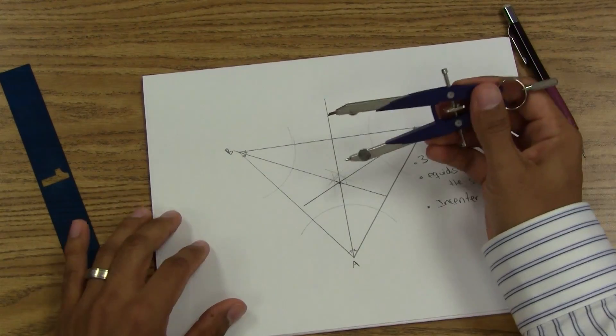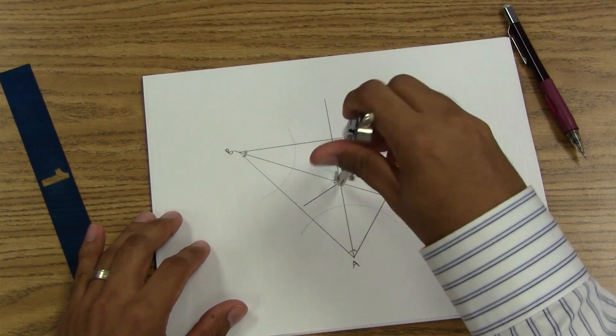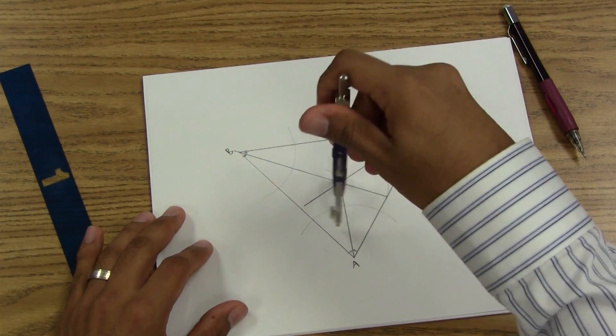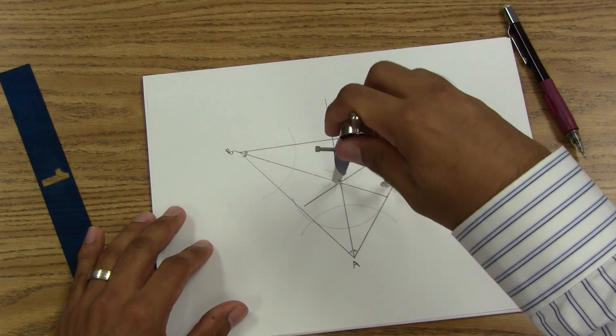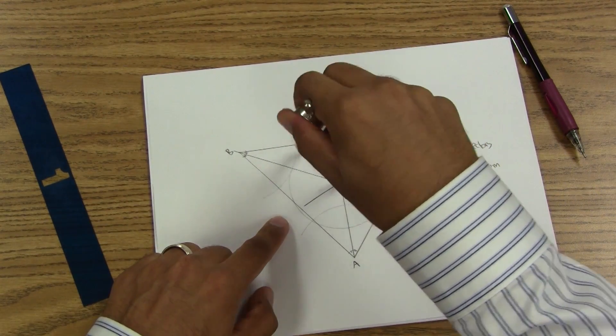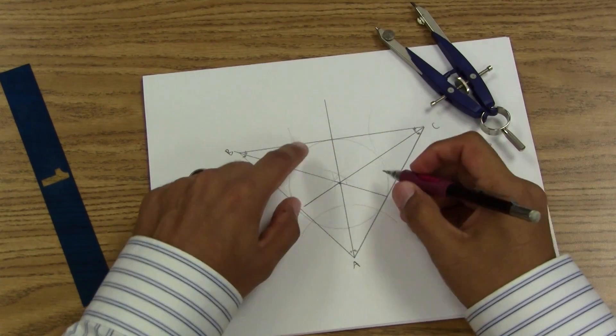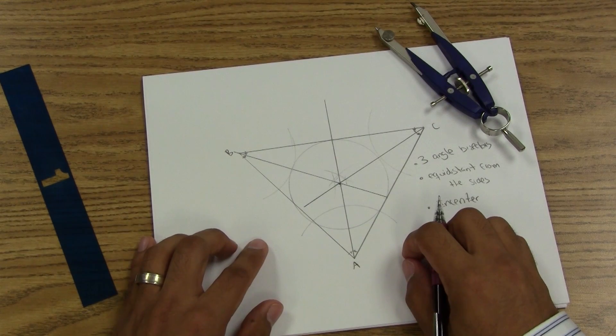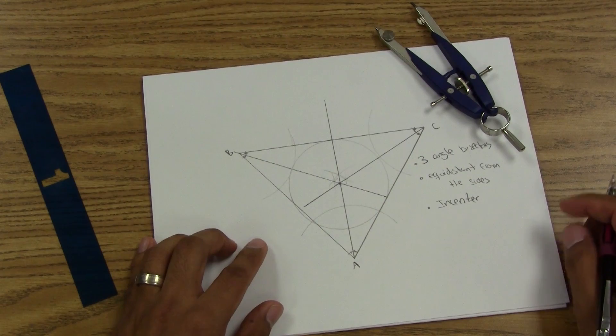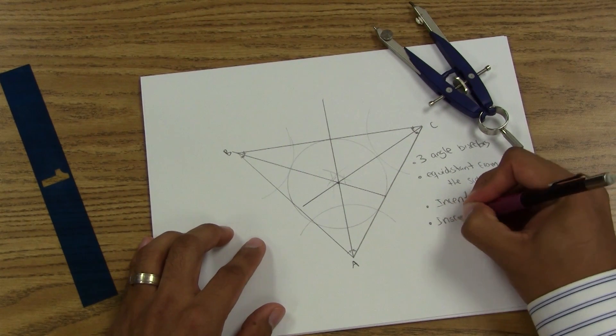Let's see, an inscribed circle is a circle inside of the triangle. Notice that my circle is now on the inside of my triangle, used to create inscribed circles.